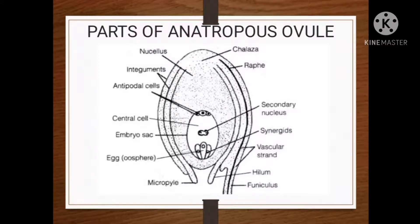The secondary nucleus is a diploid cell present at the center of the embryo sac. It is also known as the fusion nucleus or definitive nucleus. The two polar nuclei fuse in the center to form the secondary nucleus. The antipodal cells are a group of three haploid cells present towards the chalazal end of the embryo sac. These are vegetative cells and possess a number of enzymes, lipids, and proteins.